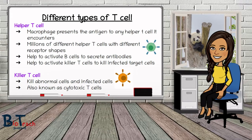The second type of T-cell is the cytotoxic T-cell, otherwise known as the killer T-cell. These cells can recognise foreign antigens on the surface of infected cells and also have the ability to divide rapidly. Their main job is to kill abnormal or infected cells. They do this by producing a protein called perforin, which makes holes in the cell surface membrane, making it permeable to all substances so the cell dies.